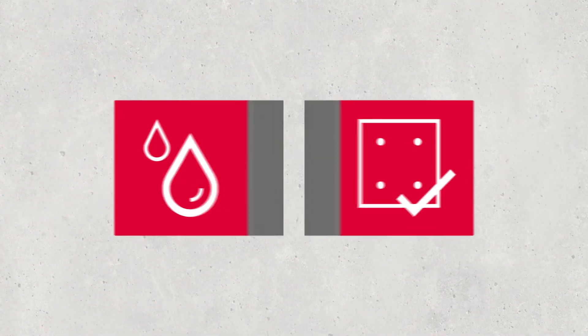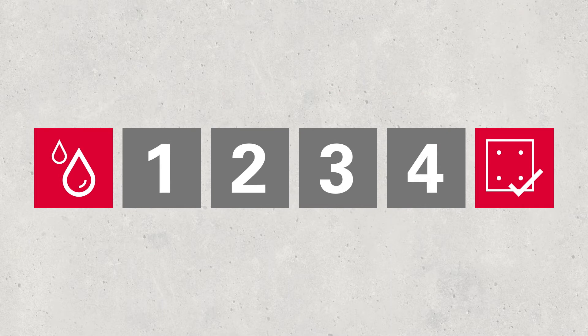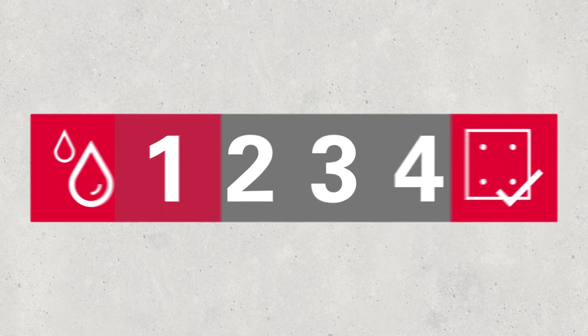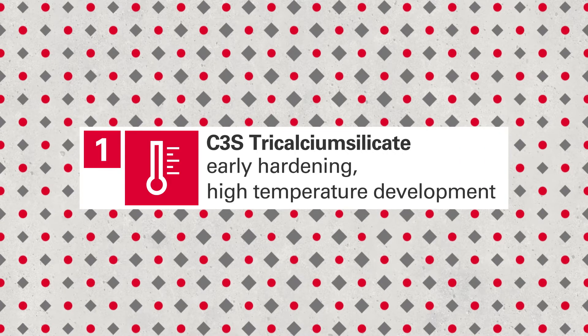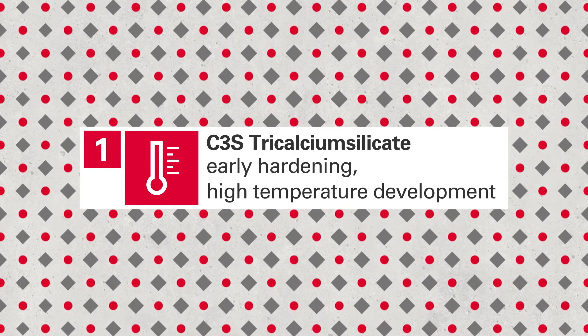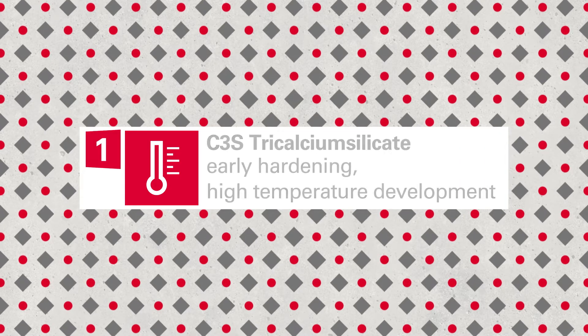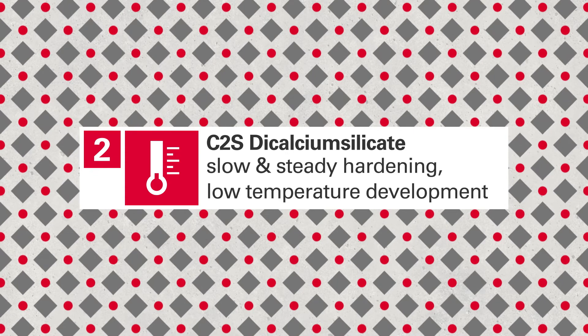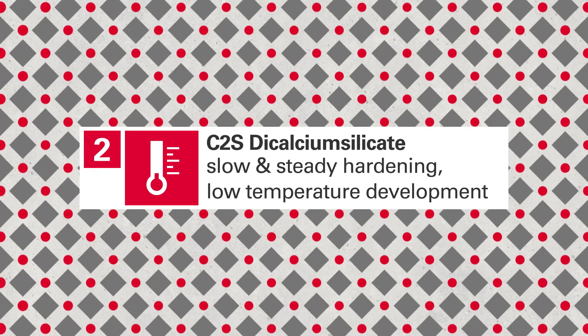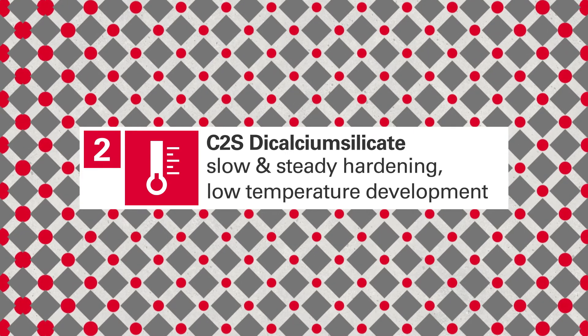Concrete goes through four stages while changing from liquid to solid state. In stage one, the cement particles are separated from the batching water. Hydration begins — this happens quickly, at a high temperature. Thereafter, in stage two, the concrete hardens slowly but steadily, at a low temperature development.